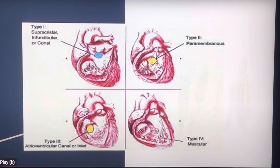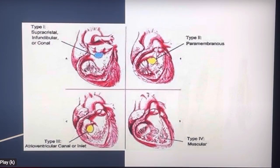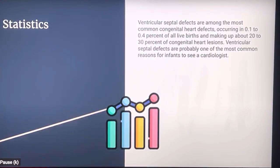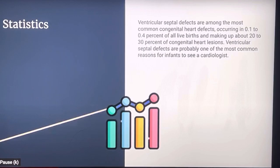Here are pictures of the different types of VSD. Ventricular septal defects are among the most common congenital heart defects, occurring in 0.1% to 0.4% of all live births and making up about 20% to 30% of congenital heart lesions. Ventricular septal defects are probably one of the most common reasons for infants to see a cardiologist.